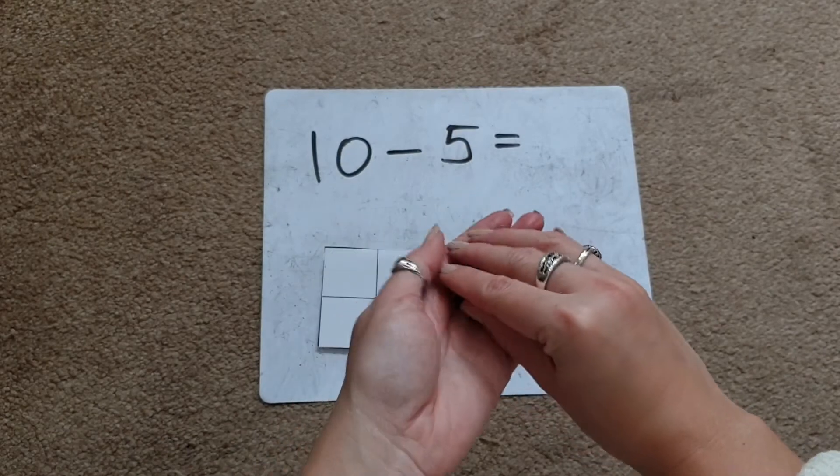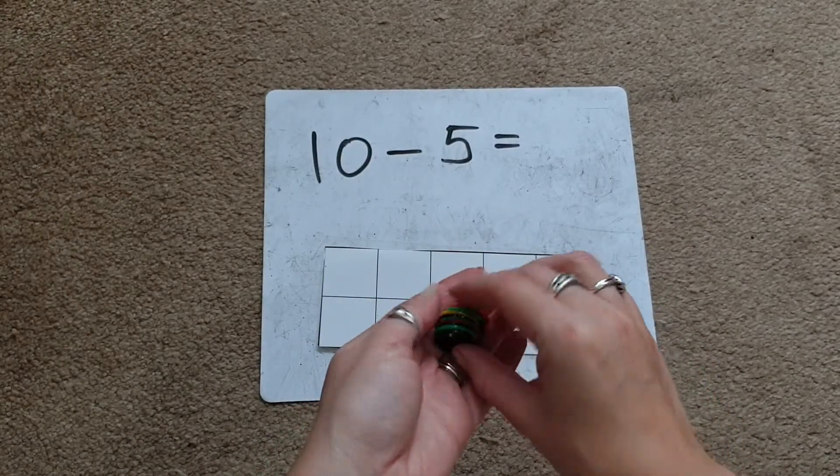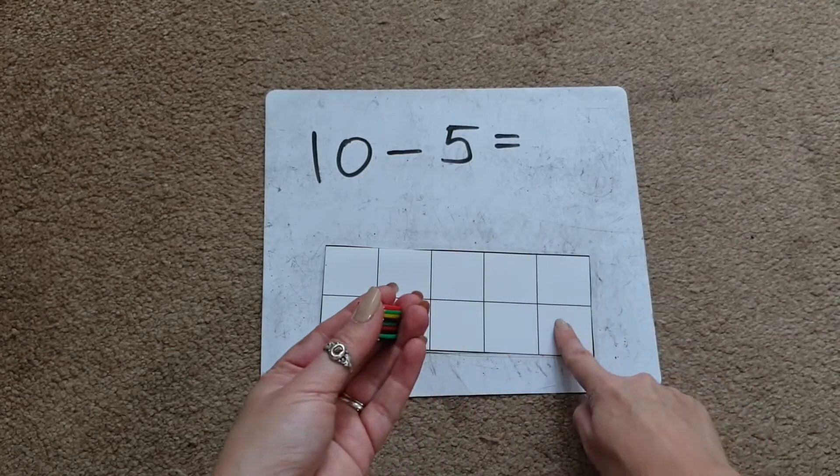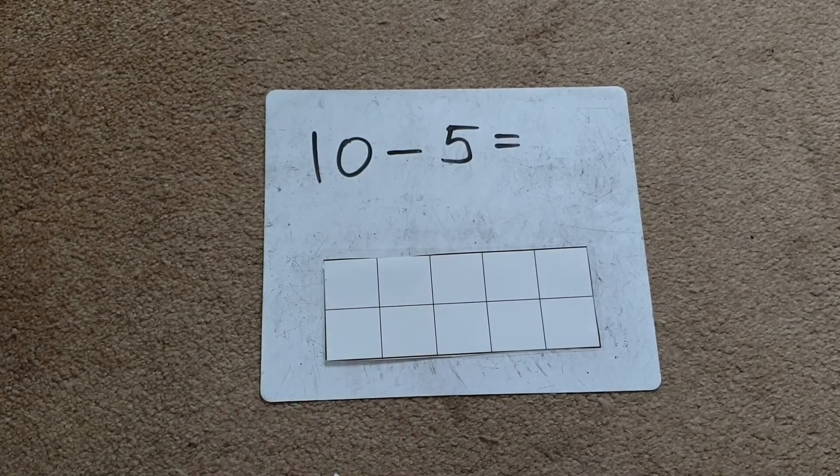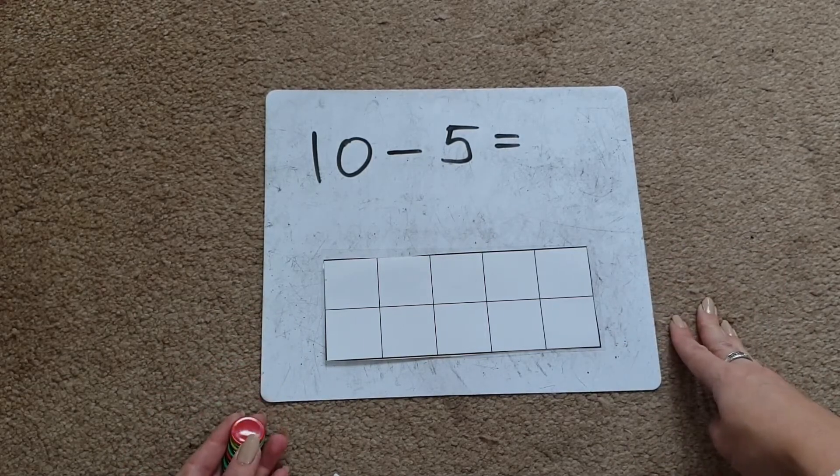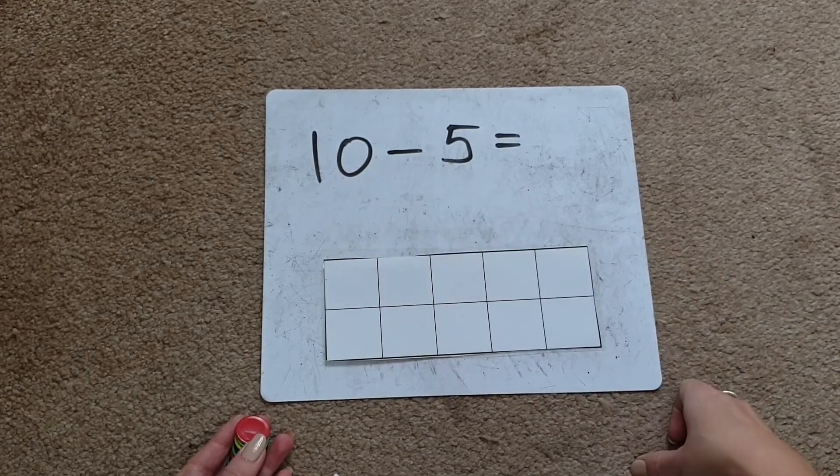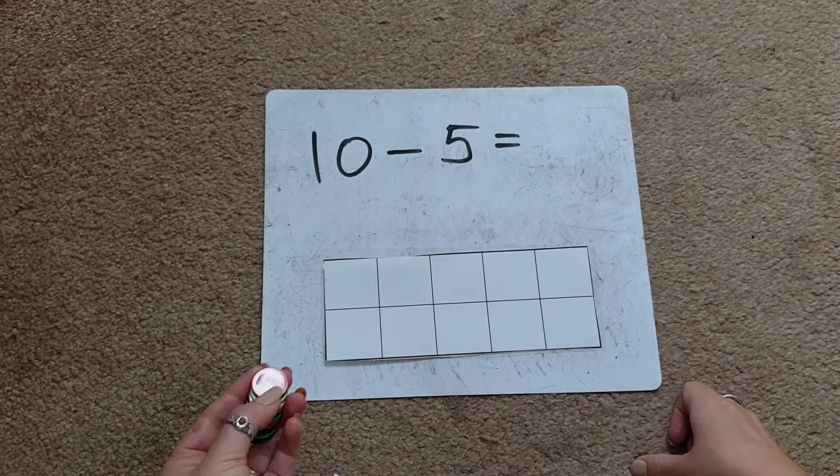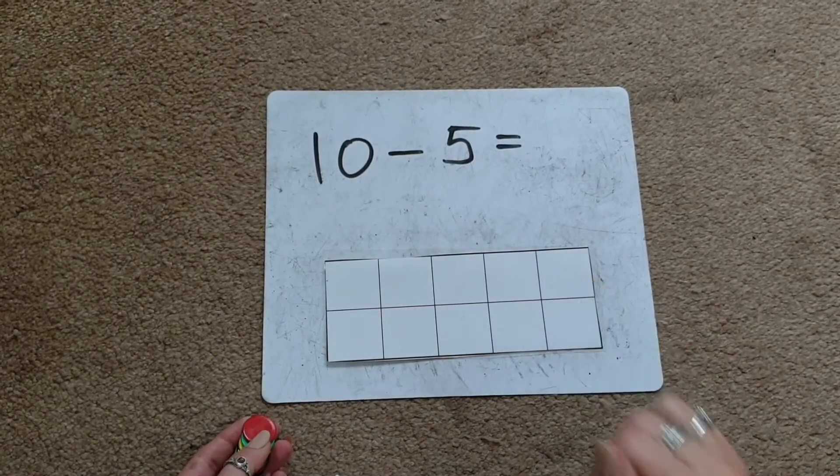I've got some counters here that I'm going to use on my 10 frame. You can use any small objects like buttons, pasta, or cubes, as long as the object fits inside the box. First, I would discuss with the child what number we're starting with - the biggest number, which is the first number in the calculation, 10. So we'll start off with 10 things and count out 10 objects onto our 10 frame.